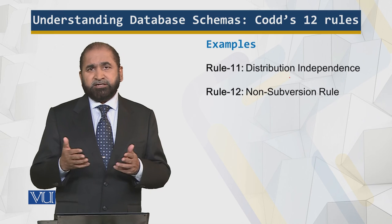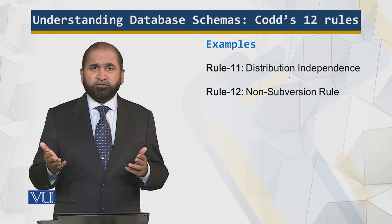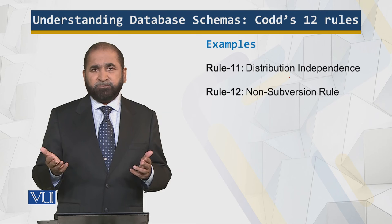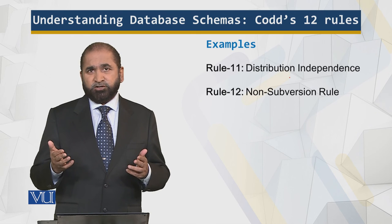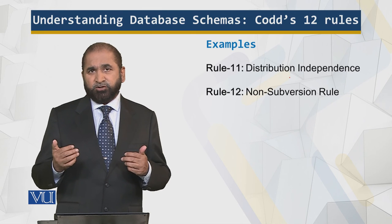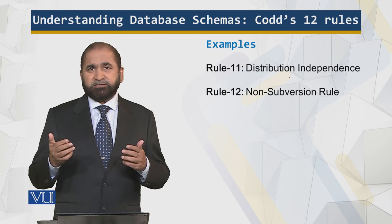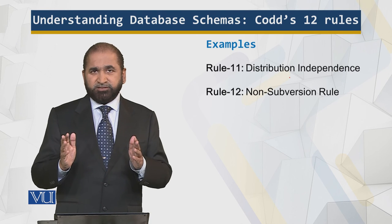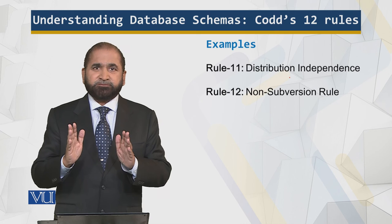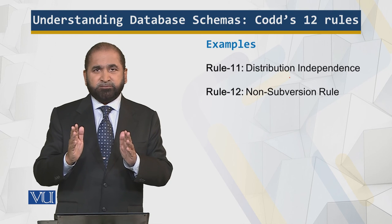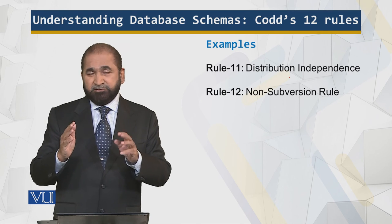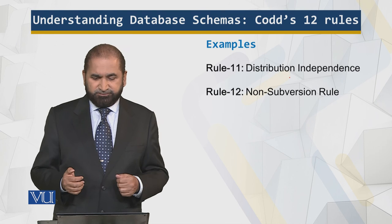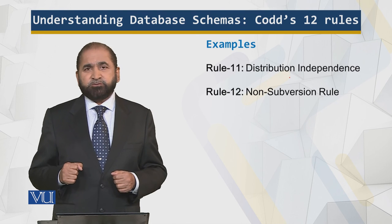Distribution independence is the basis of distributed databases. My data could be anywhere — on any server, physically located anywhere. It should not be the problem of the database designer or the user to know where the data is located. To the user, the data is located in a set of tables, and those tables may give the impression that they are on the hard disk of the end user.